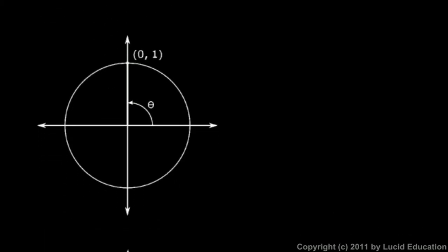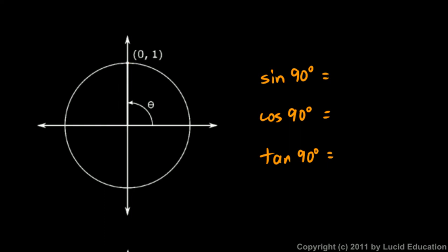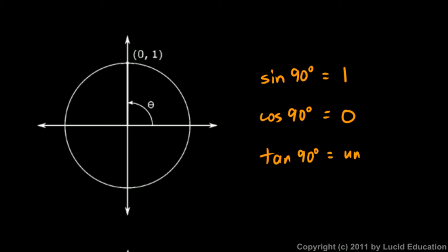Let's look at 90 degrees. If we rotate through 90 degrees, that puts us up here on the unit circle. The sine of a 90 degree angle is the y-coordinate, which is 1. The cosine is the x-coordinate, which is 0. The tangent would be the y value divided by the x value, so that would be 1 over 0, and that's undefined.